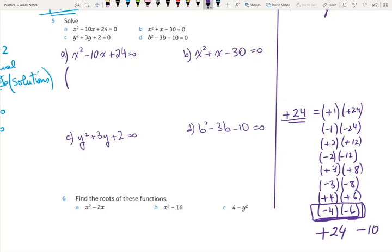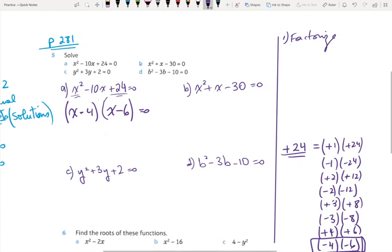So let us double check. x times x is x squared, minus 4 times minus 6 is plus 24. Now we go for foiling. Inner times inner is minus 4x. Outer times outer is minus 6x. Add these two up, it will give you minus 10x. So step 1, we're finished with it.